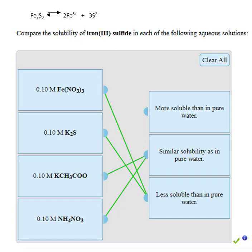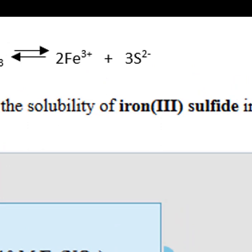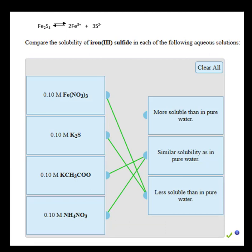For example, here we have iron-3-sulfide precipitate in water, and the equilibrium is shown with the chemical equation. We could deliberately add either iron-3-ion or sulfide ion. These are the common ions. What effect does adding either one of these common ions have on the solubility of the precipitate?